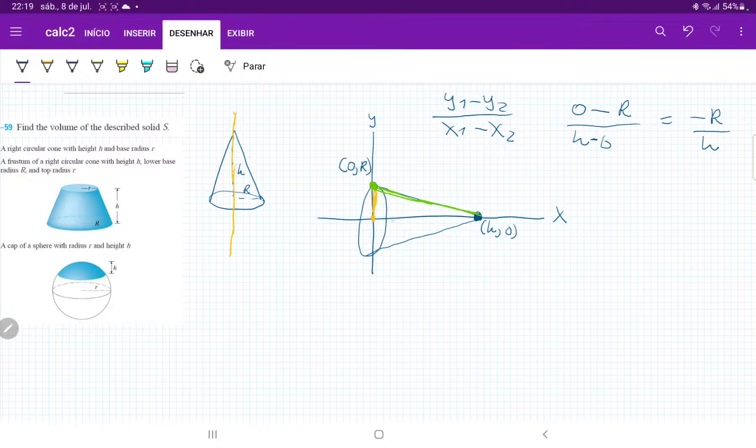And remember that a line is described by y is equal to mx plus b, where m is the slope and b is the y-intercept. So we already found the slope. So y is equal to minus r over hx. That's the slope.